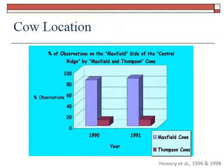Larry's first study was to put collars on cattle and see if Maxfield cows really stayed on the Maxfield side. The results showed that 80% of the Maxfield cattle in 1990 were on the Maxfield side, and only about 10% of the Thompson Creek cattle came over to the Maxfield side. That pattern held from 1990 to 1991, confirming what the ranchers had said. There was one set of cattle that stayed on the Maxfield side and one set that stayed on the Thompson side. The next question was: could these cows pass this behavior on to their calves?